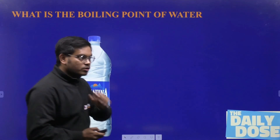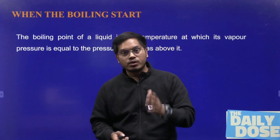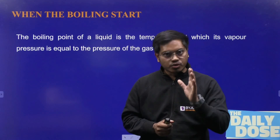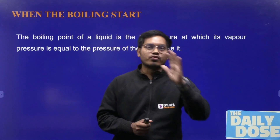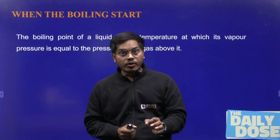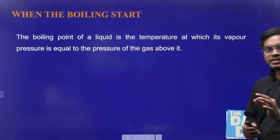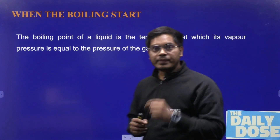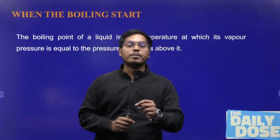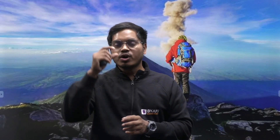You can also notice this when you go to a higher altitude. The boiling point of a liquid is the temperature at which its vapour pressure equals the pressure of the gas above it. This is the reason why, as altitude increases, the boiling point of any liquid starts decreasing — and things get boiled more quickly compared to ground level.